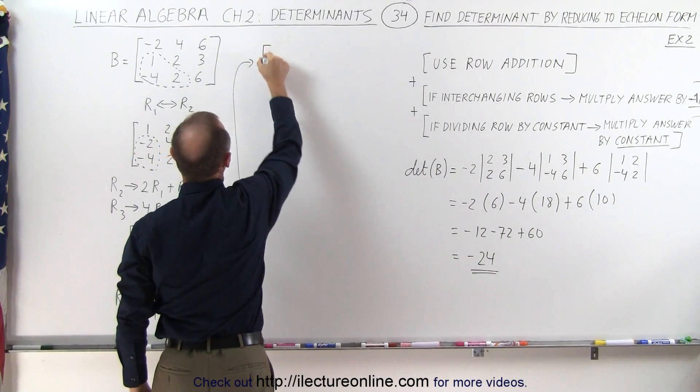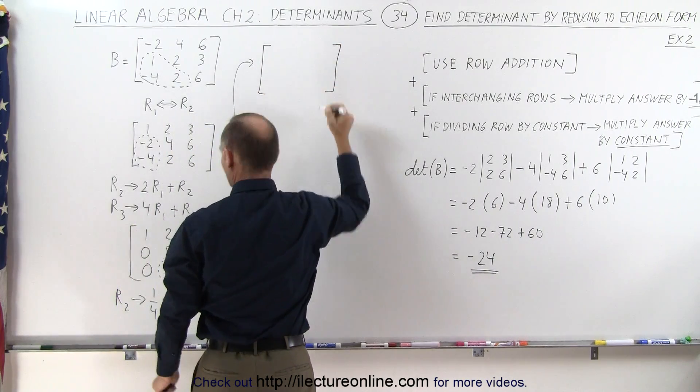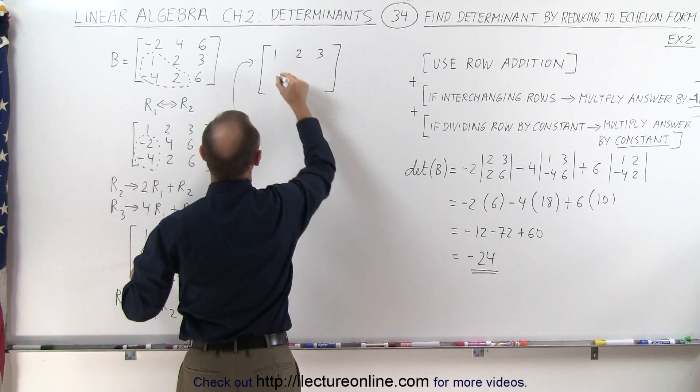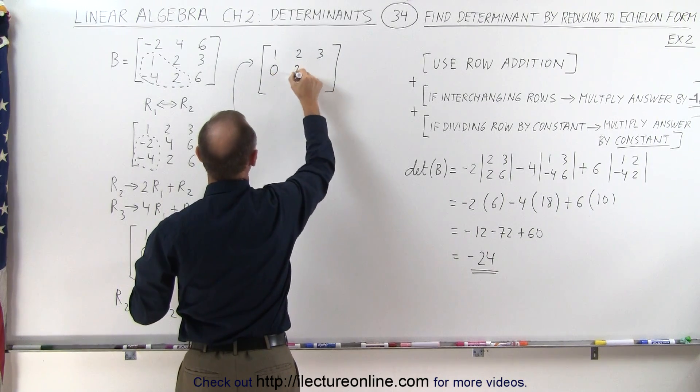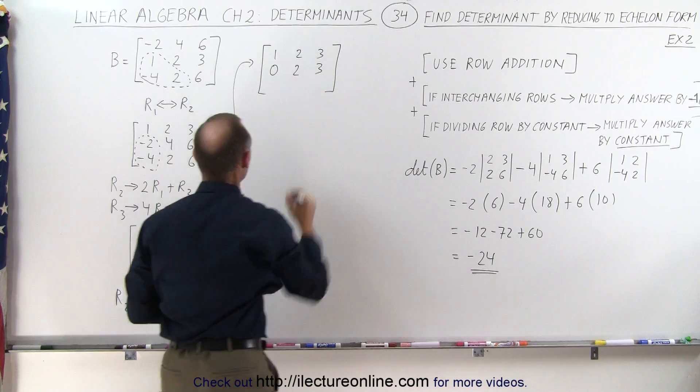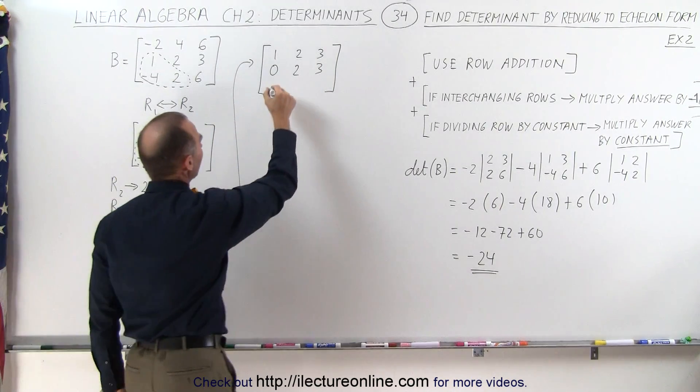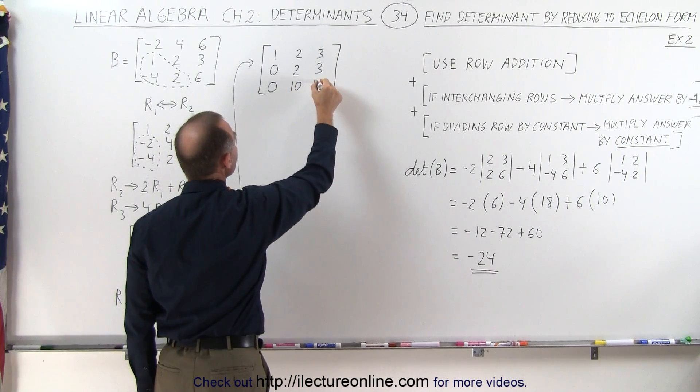Up here, we get the new matrix. That matrix now is equal to, we still have the 1, 2, and 3. This now becomes 0, 8 divided by 4 is 2, and 12 divided by 4 is 3. So the second row is now reduced to that form. The third row stays the same, 0, 10, and 18.